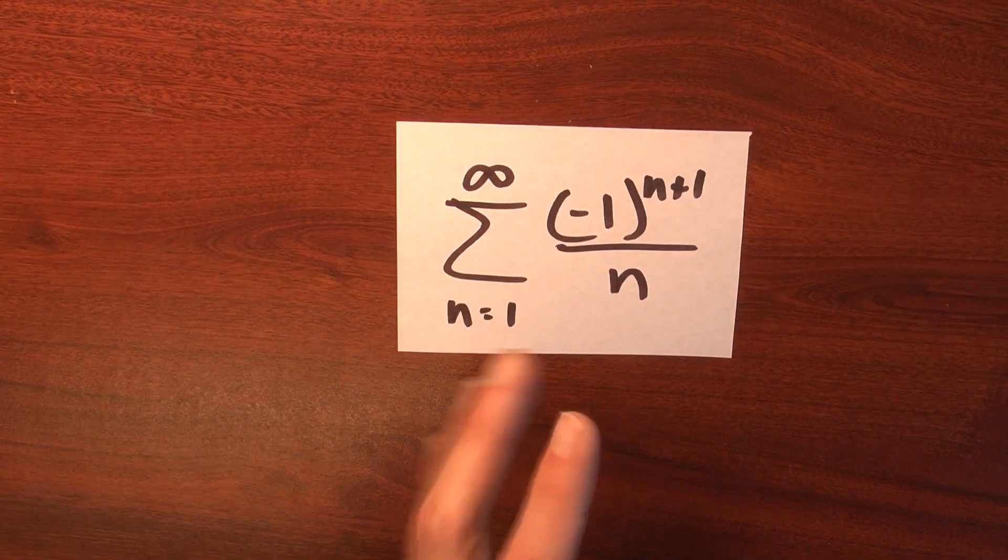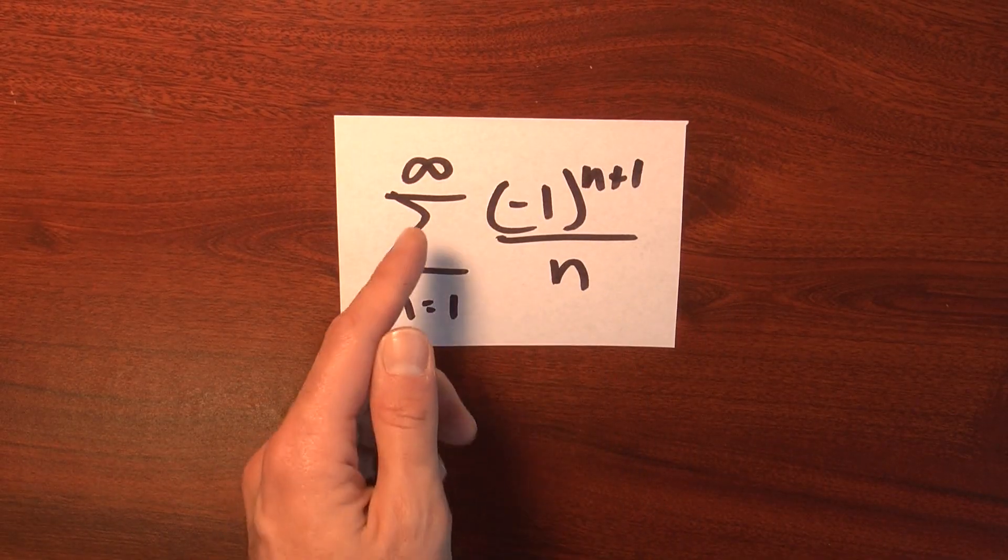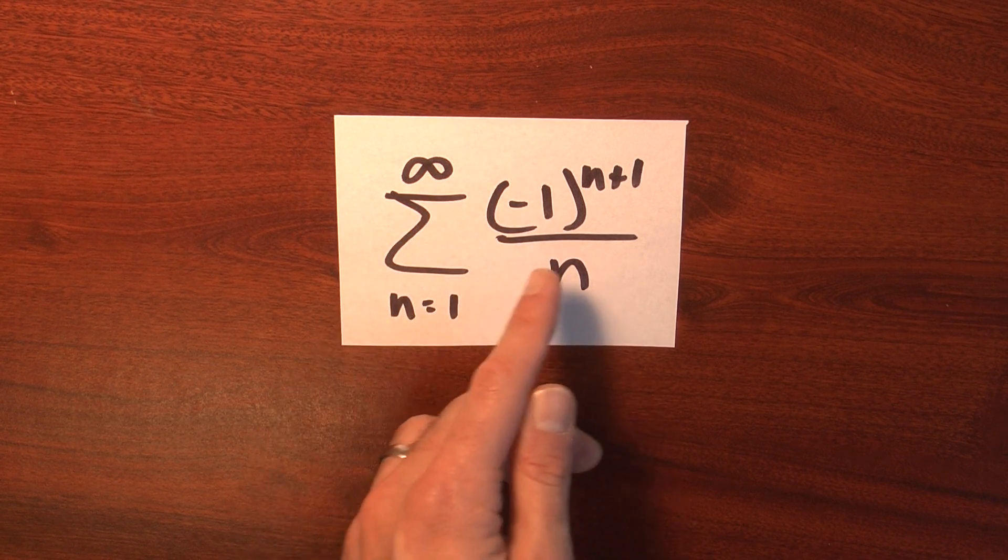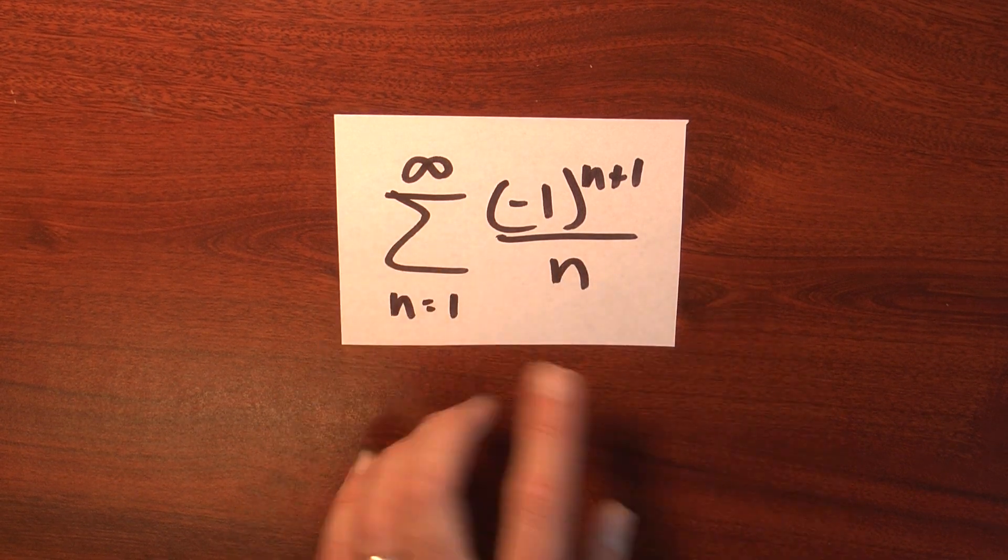The alternating harmonic series is a great example of a conditionally convergent series. Well, here's the alternating harmonic series. It's the sum n goes from 1 to infinity of (-1)^(n+1) over n.